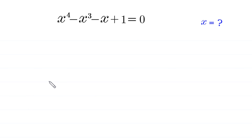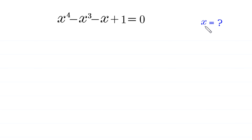Hello, welcome to how to solve this very nice algebra equation: x to the power 4 minus x cubed minus x plus 1 is equal to 0. We need to find all possible values of x, so let's start.